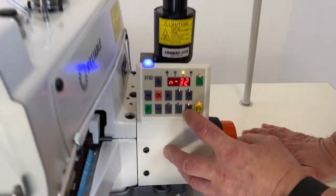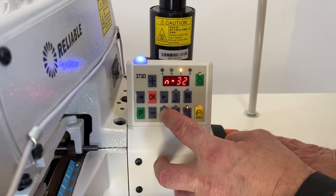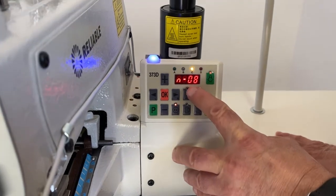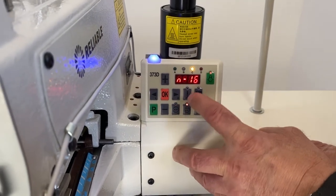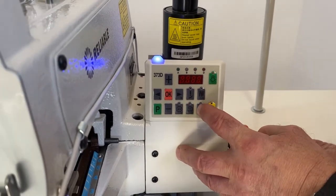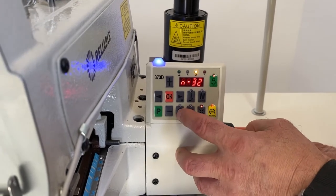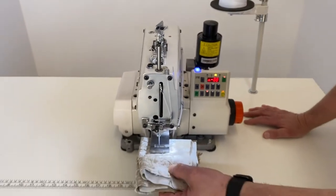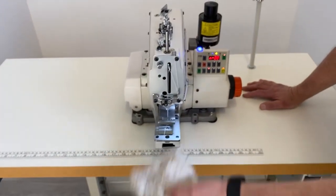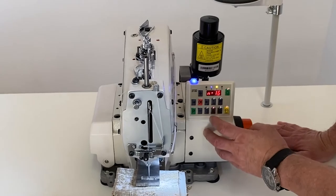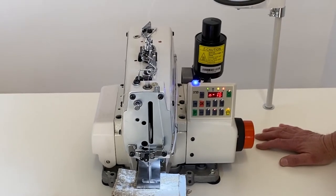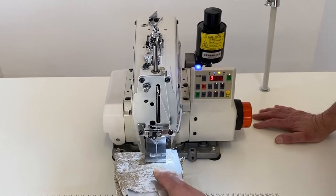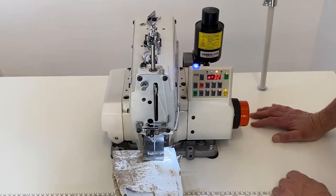What these are actually are stitch counts. There's 8 stitches, 16 stitches, and 32 stitches. So this will give you 8 stitches, this will give you 16 stitches, and this will give you 32 stitches.